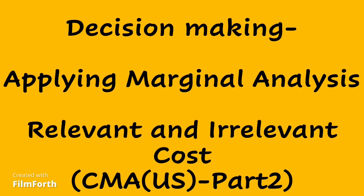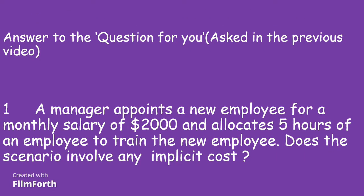Hi guys, today I'm going to explain the topic of relevant and irrelevant cost as part of decision making and applying marginal analysis. In my previous video, I had asked a question, and this is the answer: a manager appoints a new employee for a monthly salary of $2,000 and allocates five hours of an existing employee to train the new employee. The answer is yes, it does involve implicit or opportunity cost, because those five hours could have been used for something else.